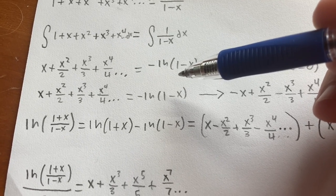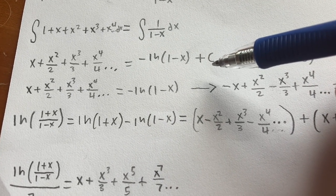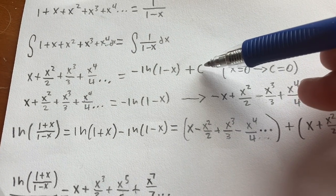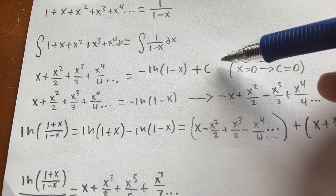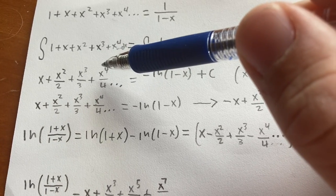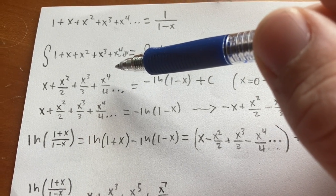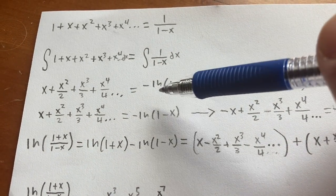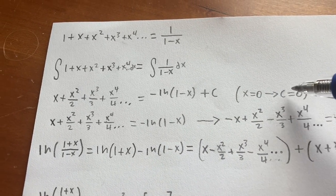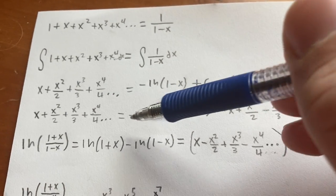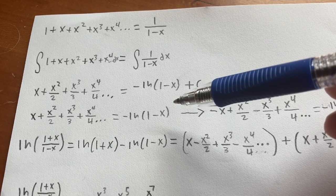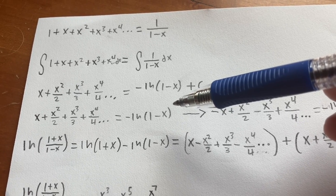However, we must account for the fact that when you integrate, there may be a constant involved. Let's call this constant c. To figure out what c is equal to, we set x equal to 0. We see that the left-hand side is equal to 0, and the first term of the right-hand side is also equal to 0. So therefore, c must be equal to 0. So we just have x plus x squared over 2 plus x cubed over 3 plus x to the fourth over 4, etc., is equal to negative natural log of 1 minus x.